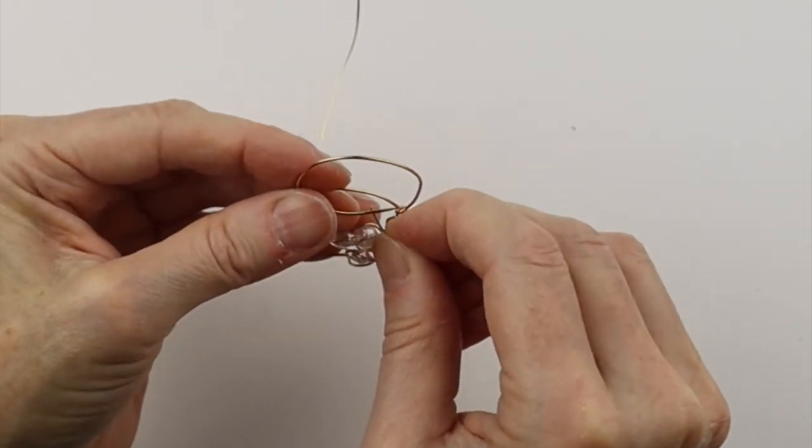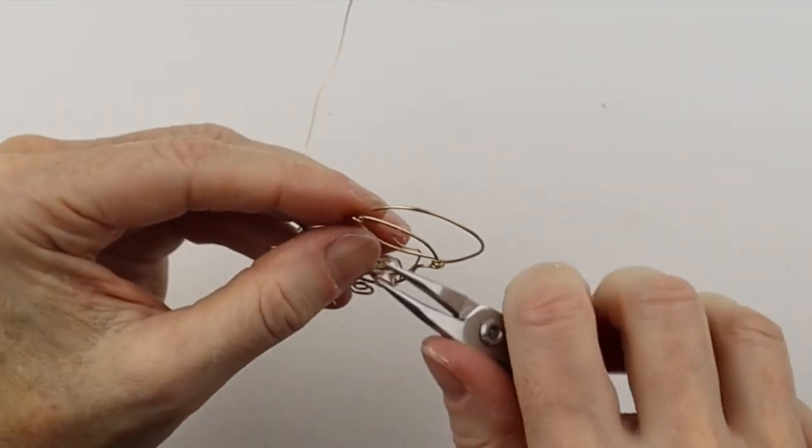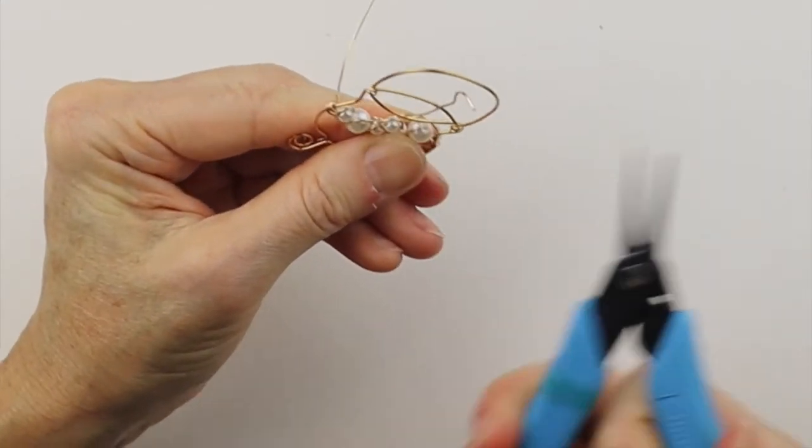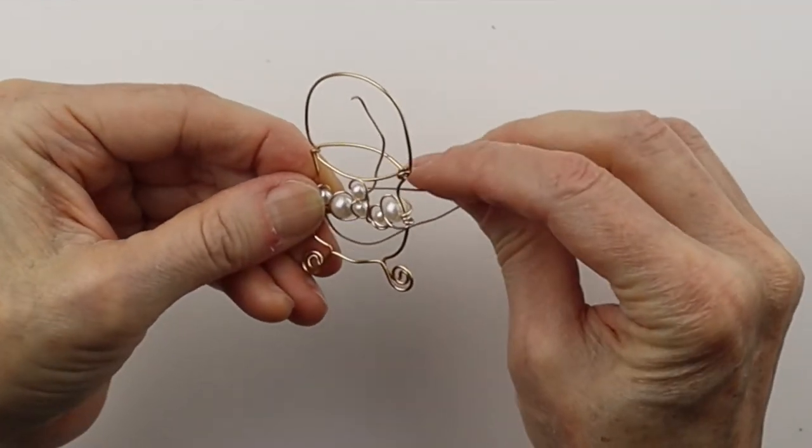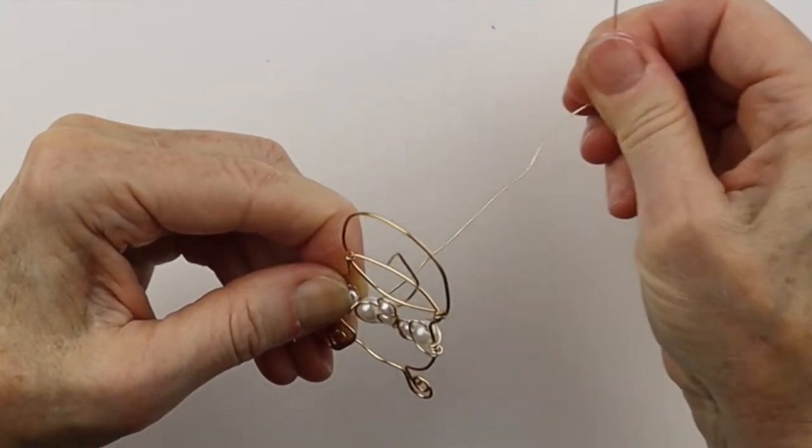And then we're going to actually stick it through these two. So we'll bring it through here, stick it up. And if these are slipping you can pinch them in place. And here too we can wind it around again, just to bring the wire towards the center a little bit.